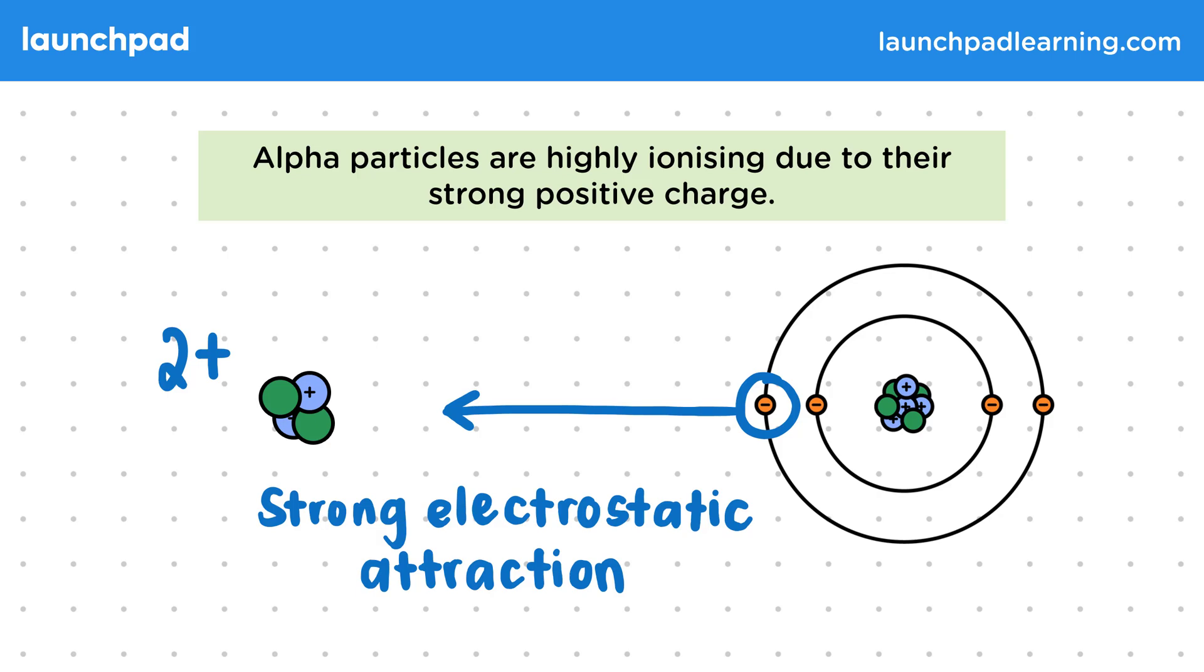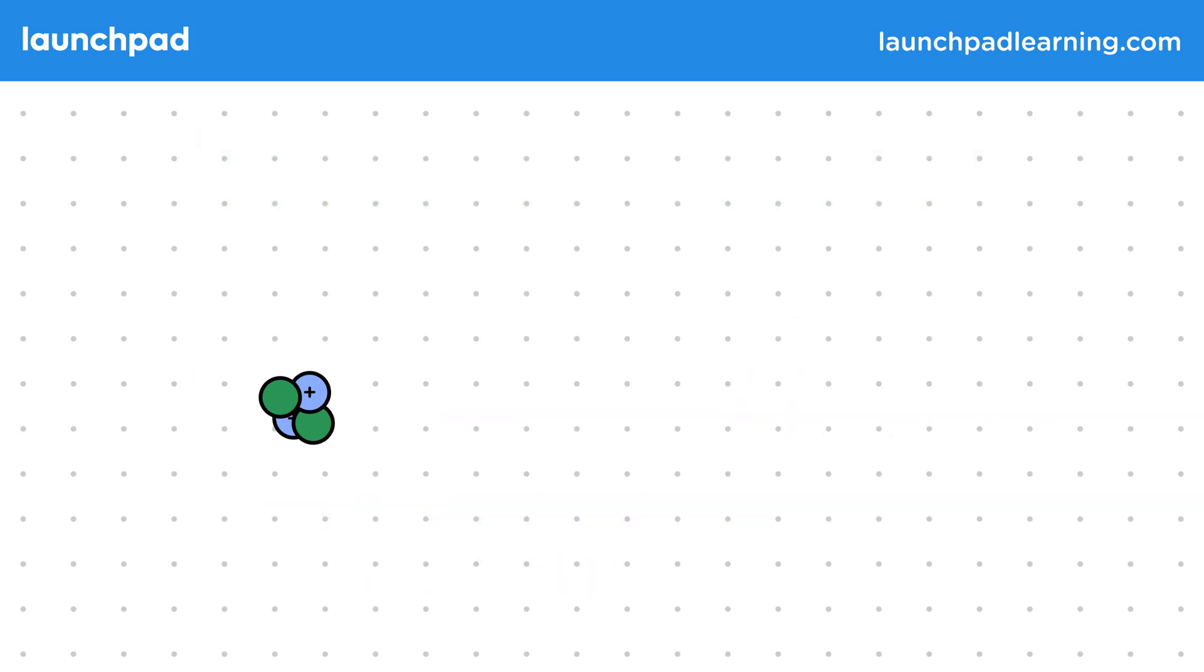But does this mean that alpha particles will cause lots of ionisation in their lifetime? Well, no, because alpha particles can only travel around 5 centimetres in air. So they have very short ranges compared to other types of radiation.